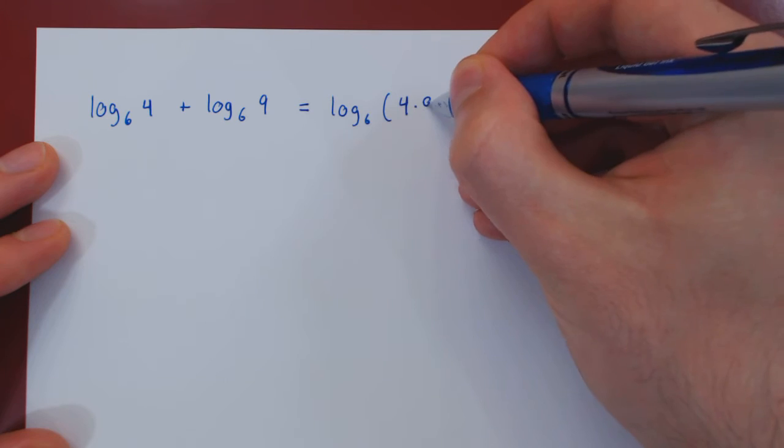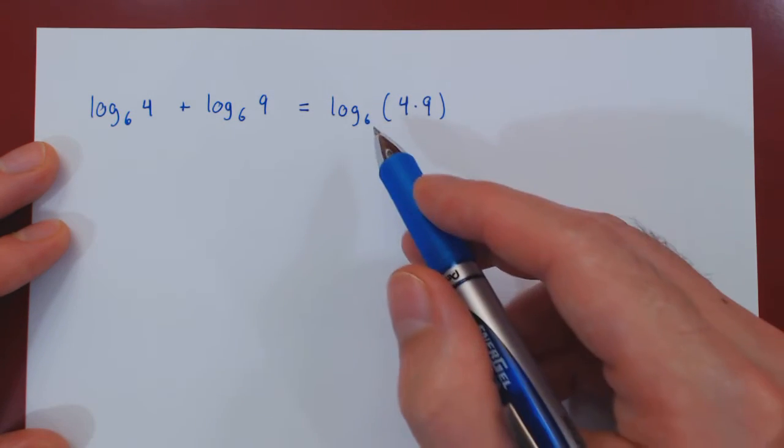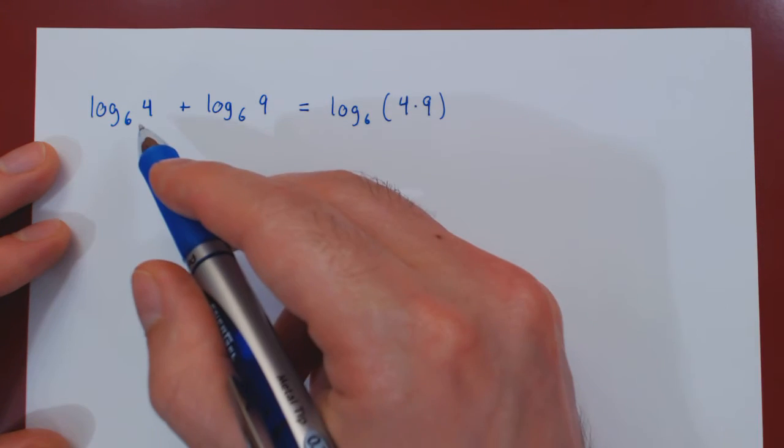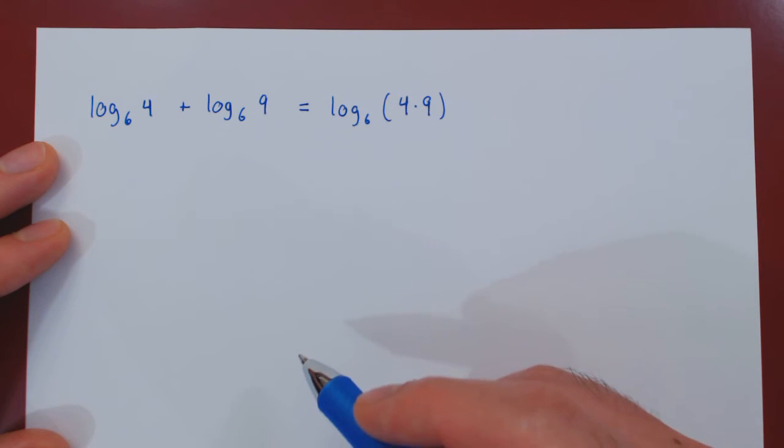So 4 times 9. And again, if you're not sure of this, go backwards. The log of a product is the log of the first term plus the log of the second term. So this checks out.